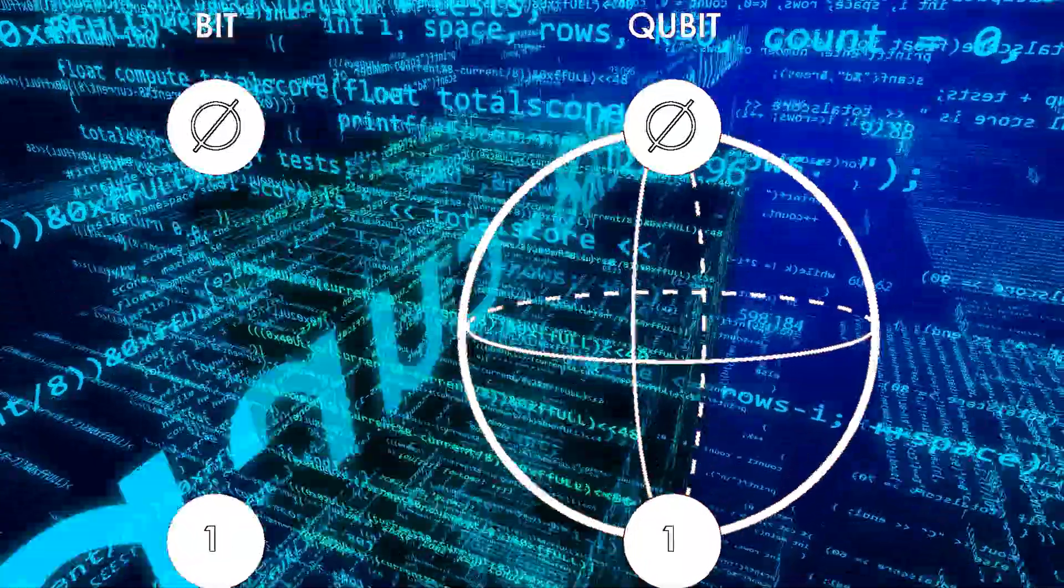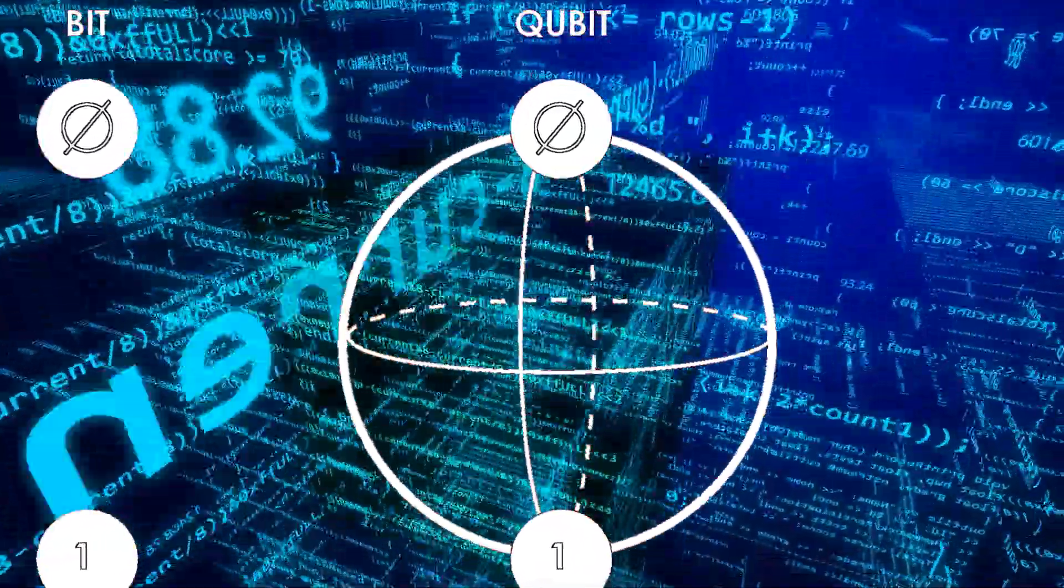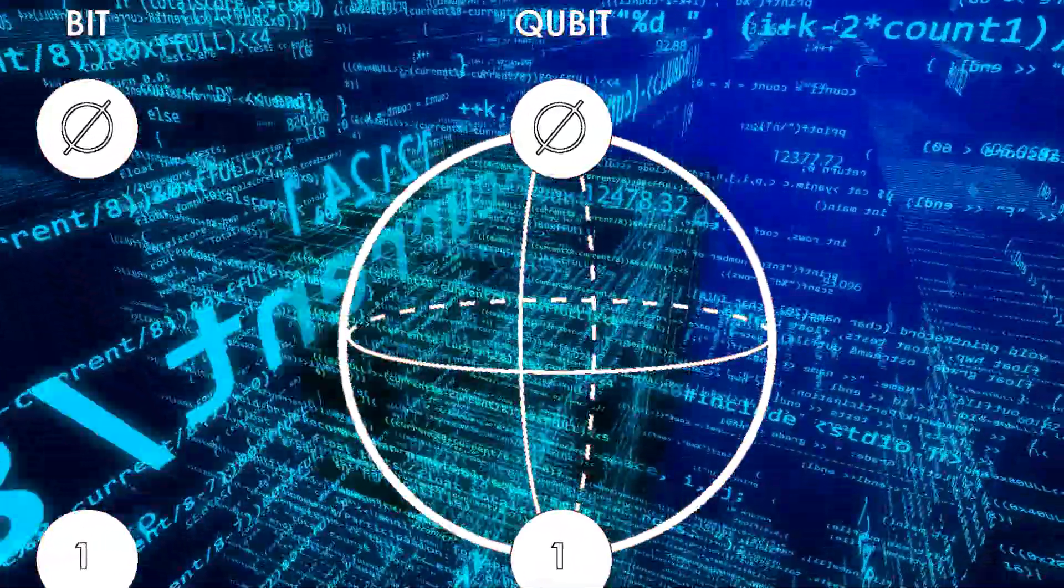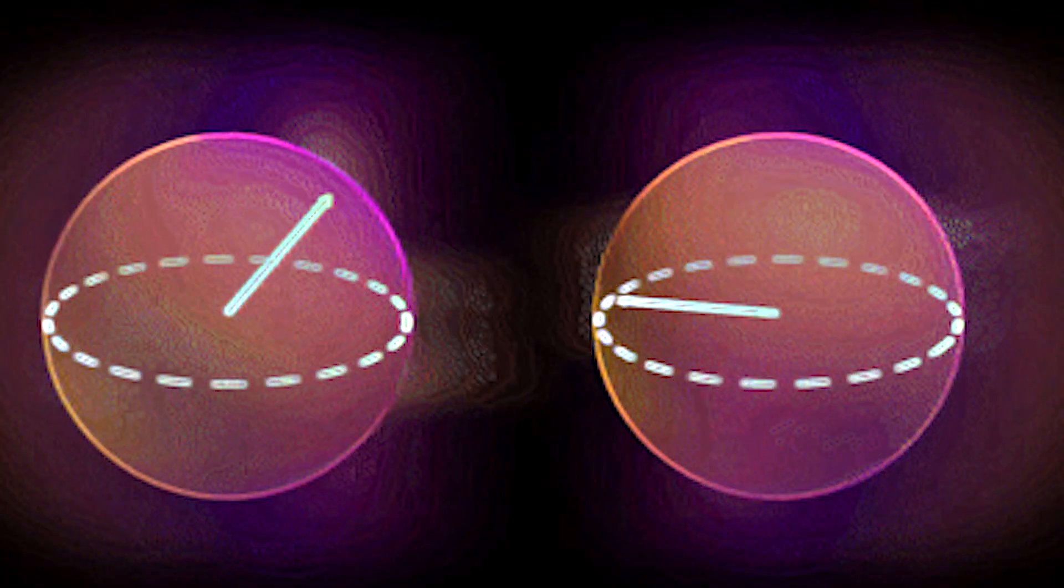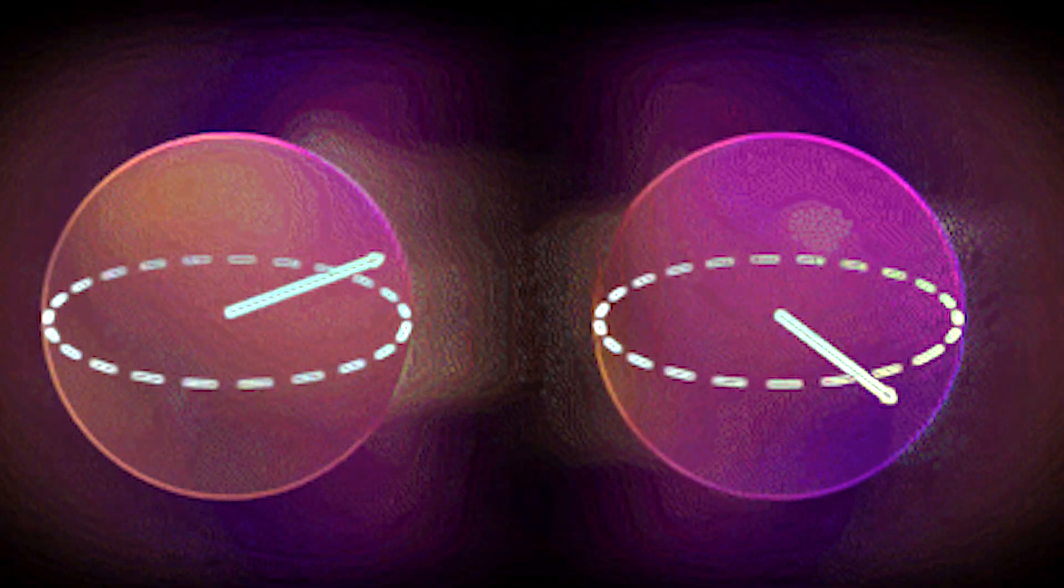Instead of being just 0 or 1, on or off like a bit, a qubit is quantum mechanical. It can have a blurry value between 0 or 1, or even a combination of 0 and 1.